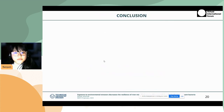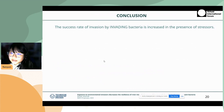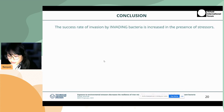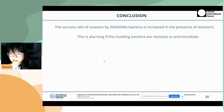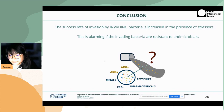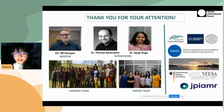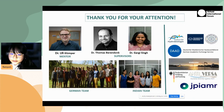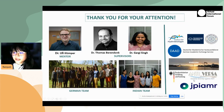In conclusion, the success rate of invasion by invading bacteria is increased in the presence of stressors — in this case, E. coli and copper. This can be very alarming if the invading bacteria are resistant to antimicrobials. Hence, we think we should rethink the co-release of ARBs and ARGs with all the abiotic pollutants. I'd like to thank my mentor Uli Klumper, our supervisors Dr. Thomas Berendong from Germany and Dr. Gagi Singh from India, my Indian and German team, and all the fundings I received for the research. Thank you.